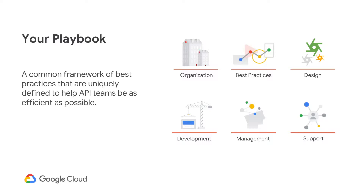Your Playbook should focus on six key areas: your organization, best practices, API design decisions, development requirements, API management and deployment processes, and overall support guidelines. This should be a living document derived from industry best practices and, best of all, the experience of people inside your company.